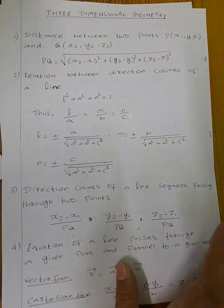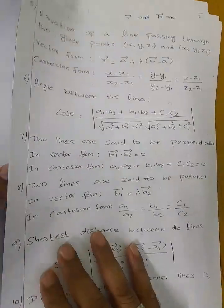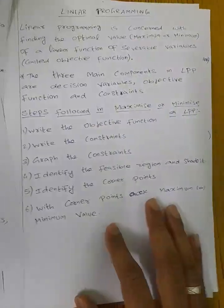Next, vector dot product and cross product. Next, three-dimensional geometry: all formulas, vector form, Cartesian form, angle between two lines, all formulas.